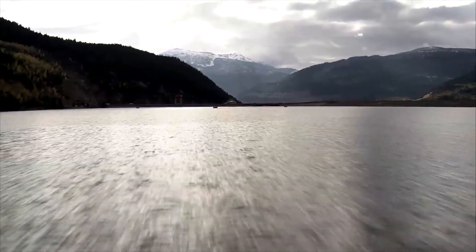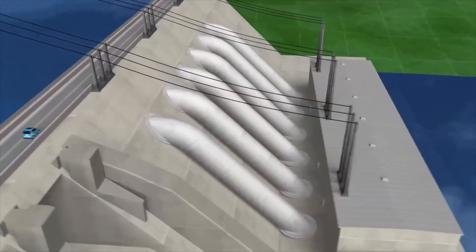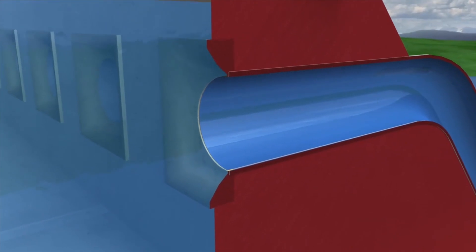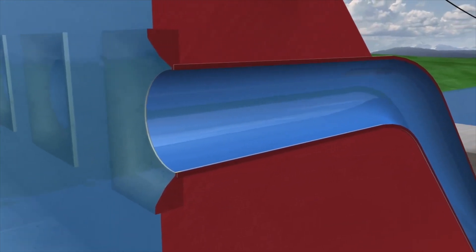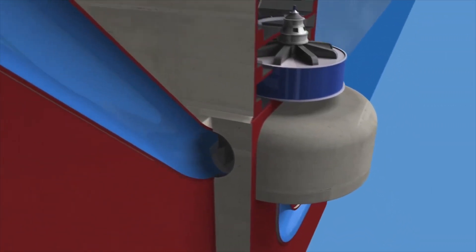The dam creates a reservoir, which stores water until it's ready to use. Water enters the generating system through a series of giant intake pipes. It then travels down a steep pipe called a penstock, creating a massive column of water with a huge amount of force.